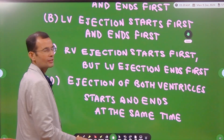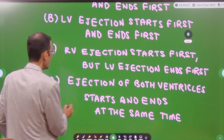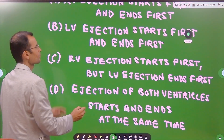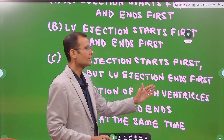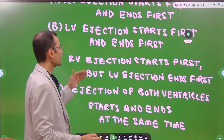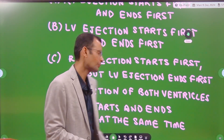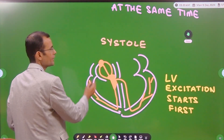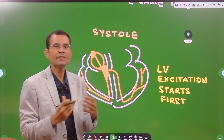What say — do you want to answer this? The answer is C: right ventricular ejection starts first but left ventricular ejection ends first. Now if you are surprised by the answer, let's see the concept.